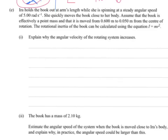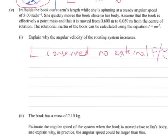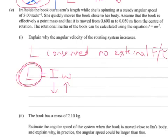With a closed system with no external forces and torques acting, angular momentum is conserved. L equals I omega — I being the rotational inertia and omega being the angular velocity. So if the rotational inertia decreases when you're pulling the book closer, the angular velocity has to increase to keep L the same, because there are no external forces and torques being applied.